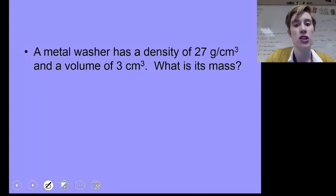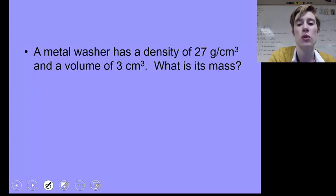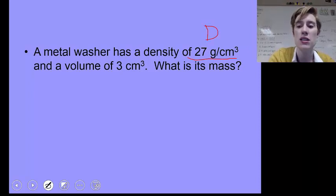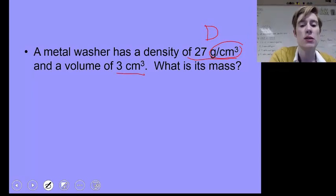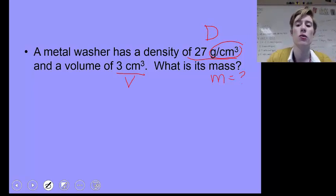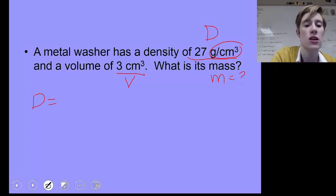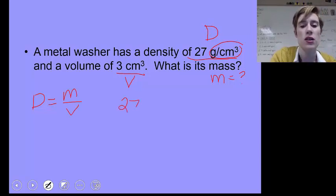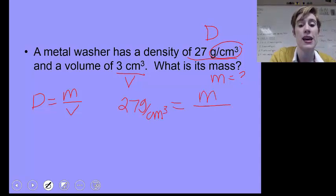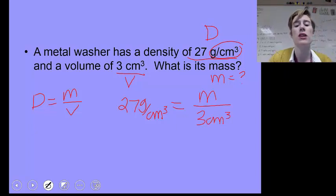Okay, next problem, it says a metal washer has a density of 27 grams per centimeters cubed. So I'm going to stop here, and remember, the first thing we do is we always label our givens. Labeling this D, because these are the units for density. This metal washer also has a volume of 3 centimeters cubed, so I'm going to label this V. And now I'm solving for mass. So it's also good to write down what you're solving for in your problem. So we write out a formula again. It's D equals M over V. Now this one's a little bit trickier, because when I plug in my numbers, density goes here. And then mass, we don't know, so I have to just write it as M. And volume is 3 centimeters cubed.